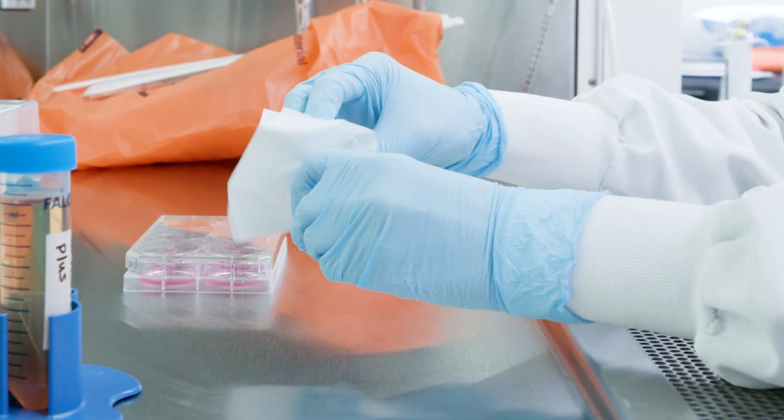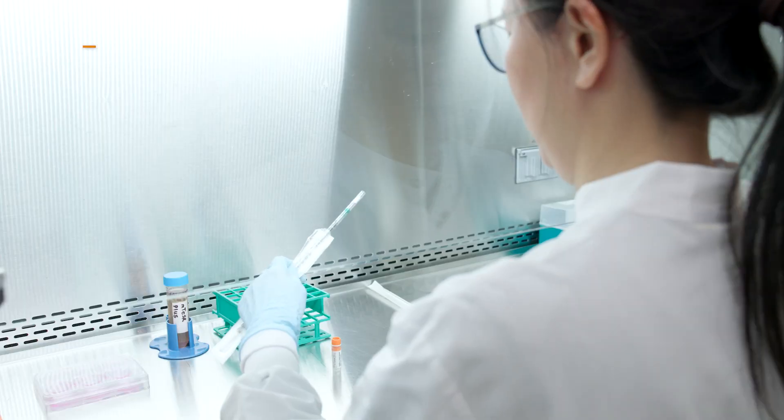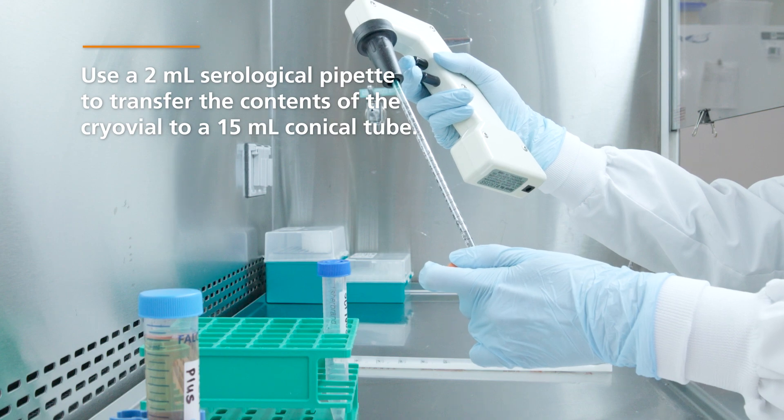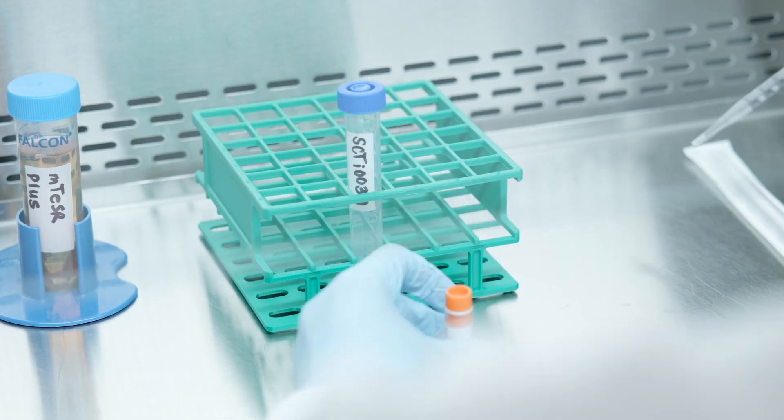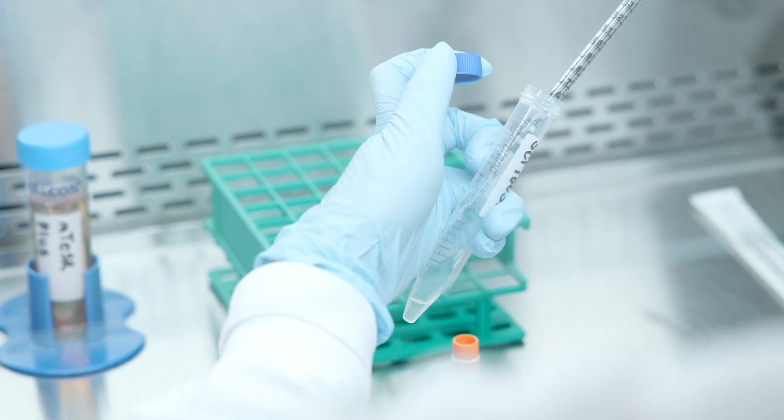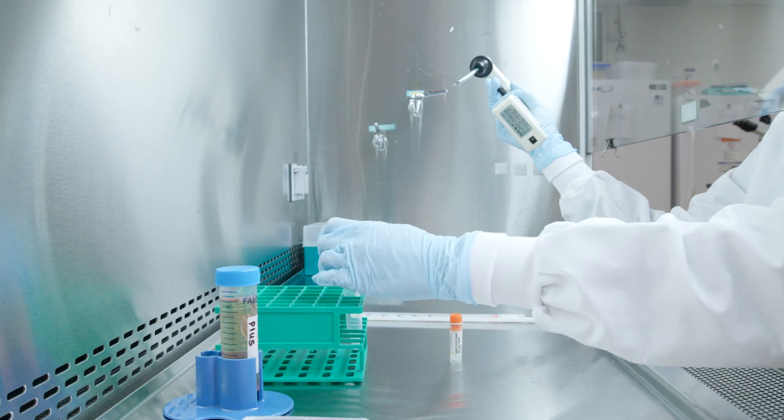Wipe the outside of the vial again with 70% ethanol or isopropanol. Use a 2-milliliter serological pipette to transfer the contents of the cryovial to a 15-milliliter conical tube. It's advisable to use a 2-milliliter serological pipette instead of a 1-milliliter pipette to minimize breakage of cell aggregates.